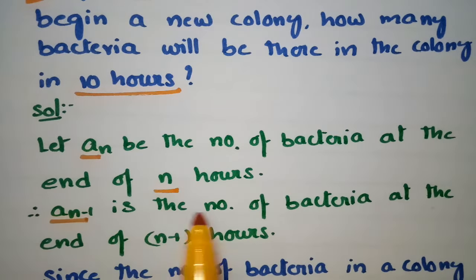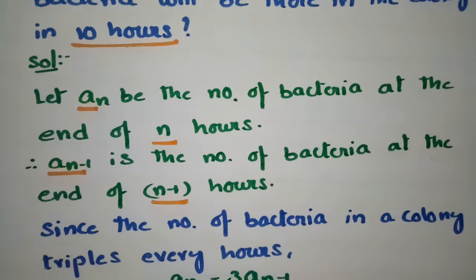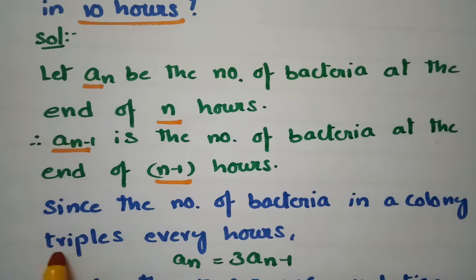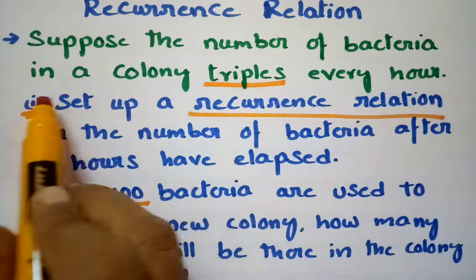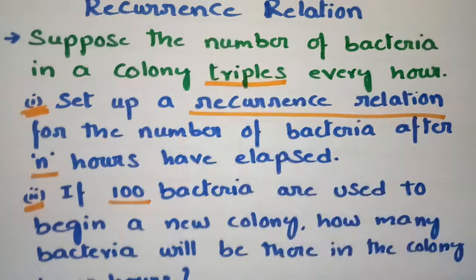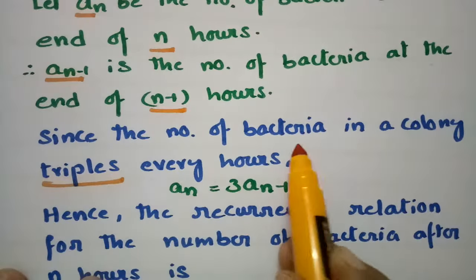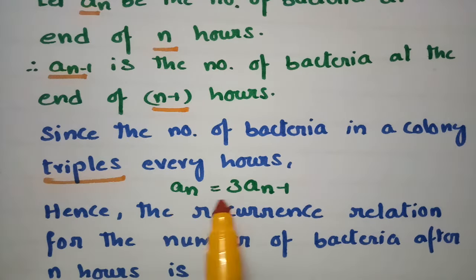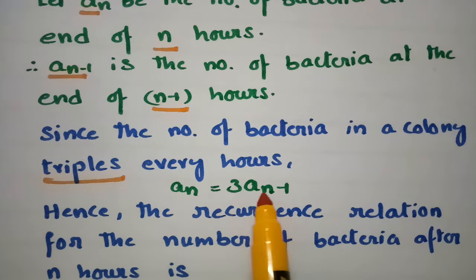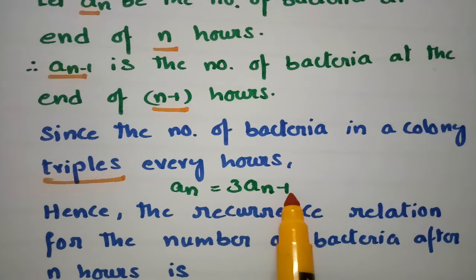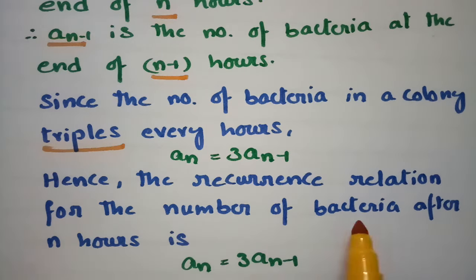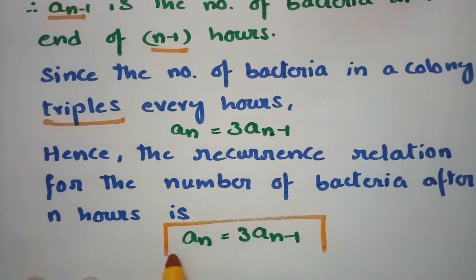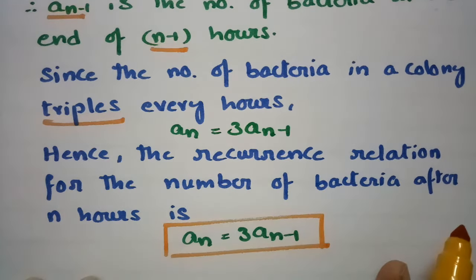And obviously An minus 1 is the number of bacteria at the end of n minus 1 hours. Since the number of bacteria in a colony triples every hour, An is equal to 3 times of An minus 1. Hence, the recurrence relation for the number of bacteria after n hours is An equals 3 times An minus 1.